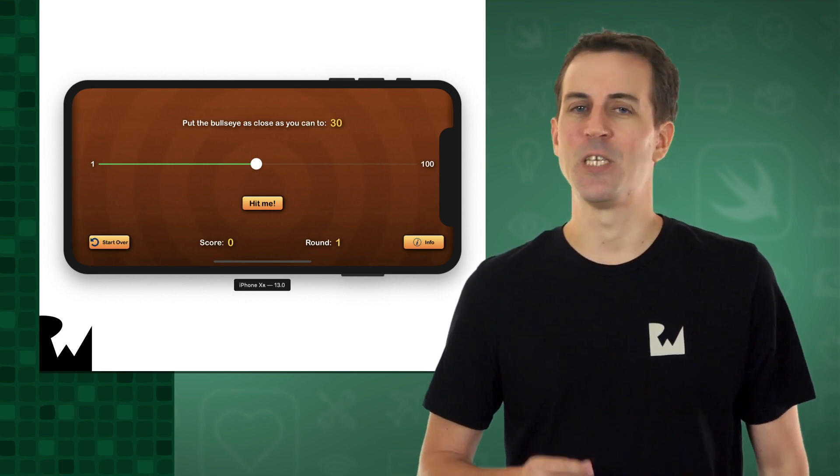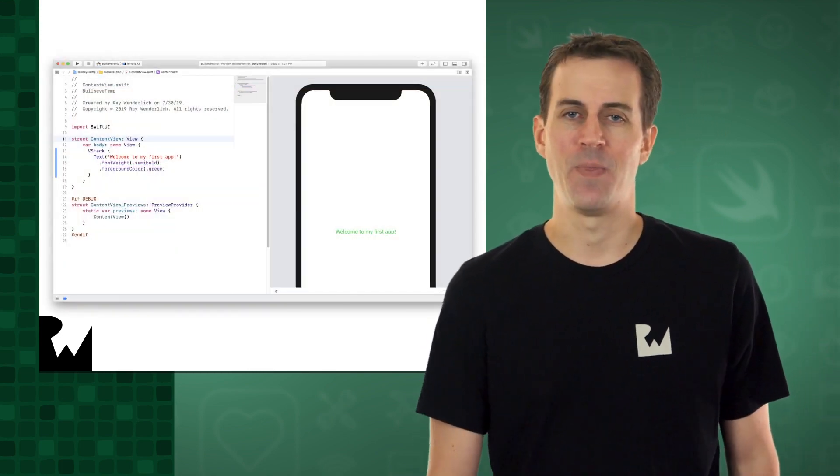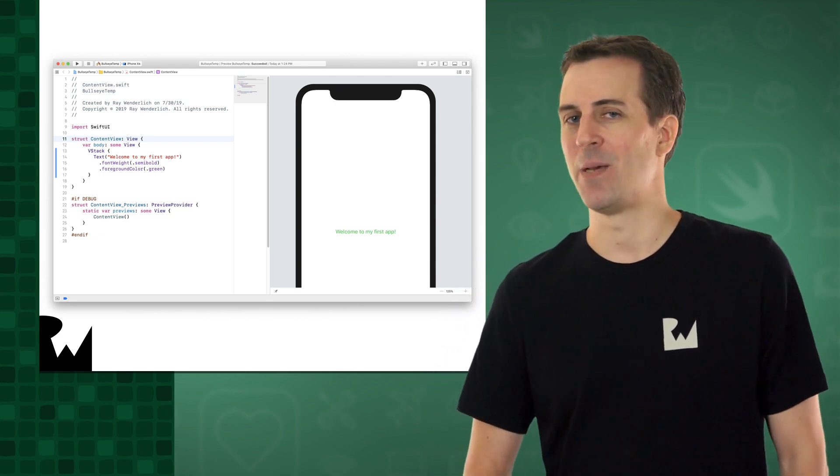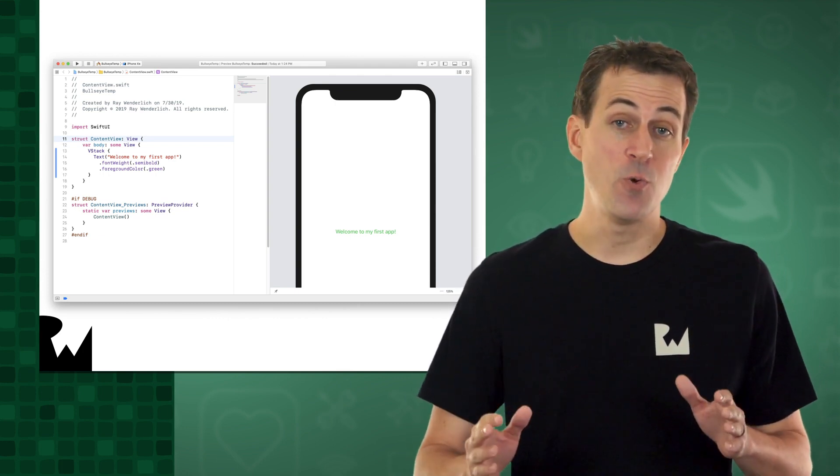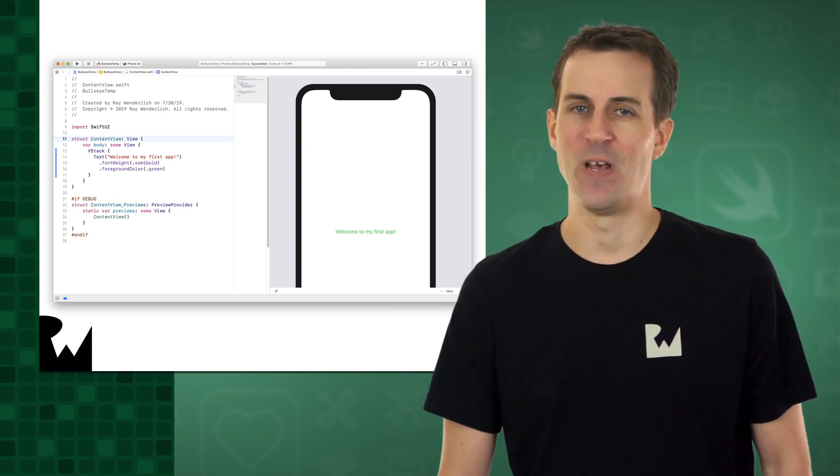You'll create Bullseye using SwiftUI, which is the hot new way to create user interfaces in your app in Swift. SwiftUI was just released at WWDC 2019 and represents the future of iOS development. So by learning it now, you'll be getting a serious head start over other developers.